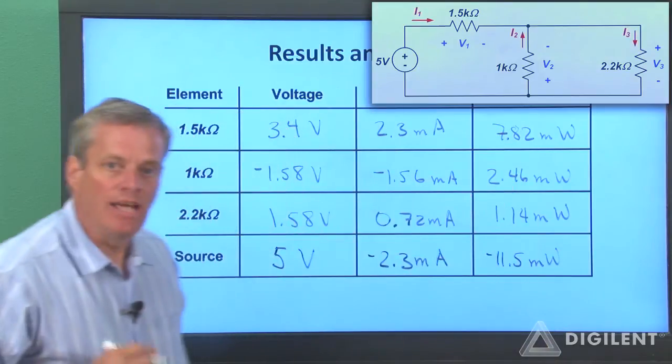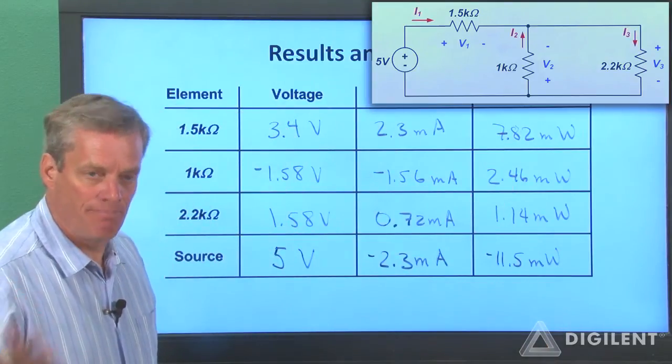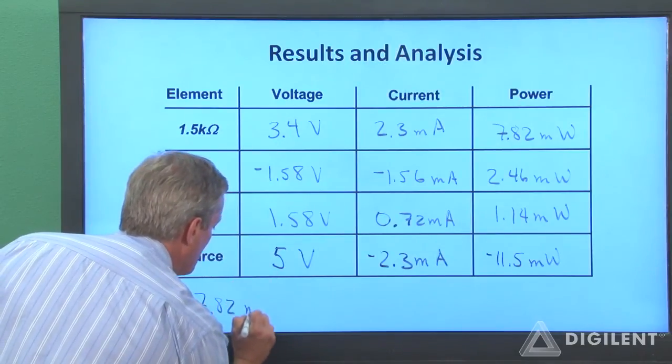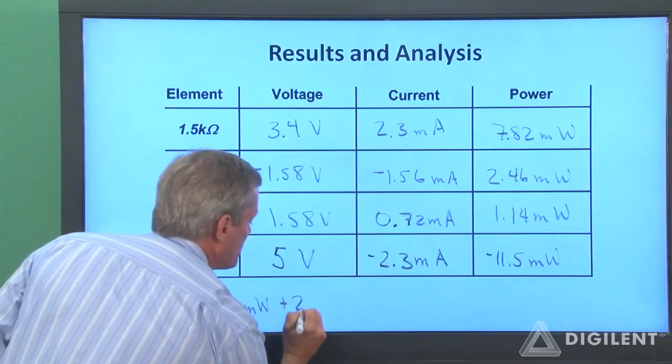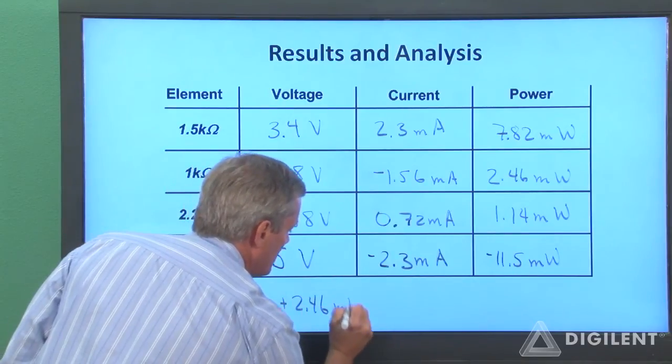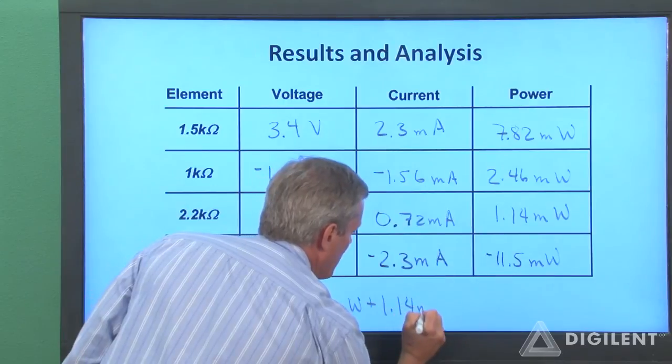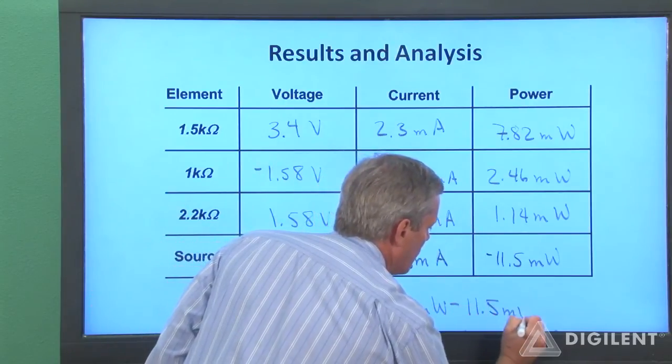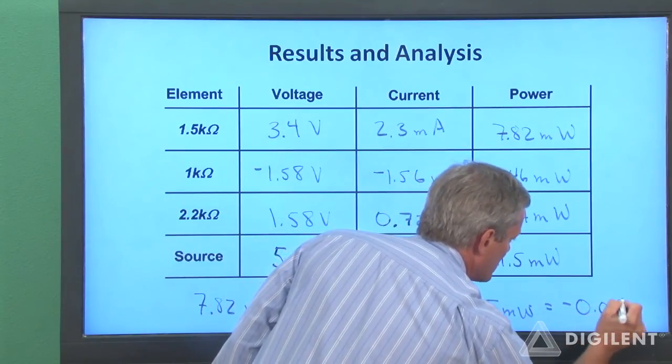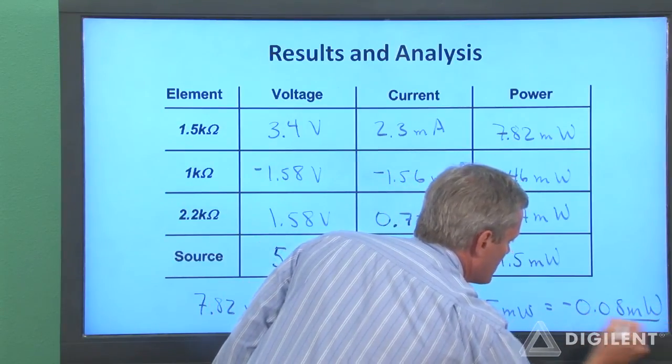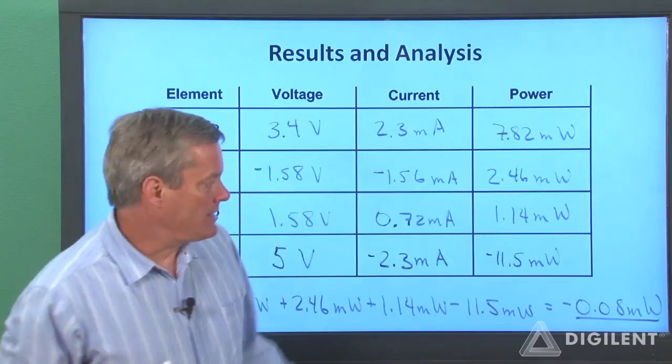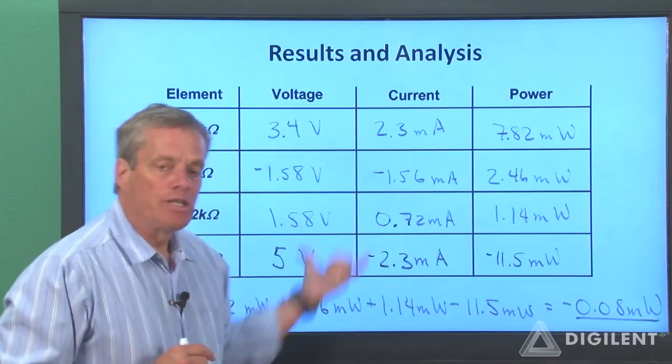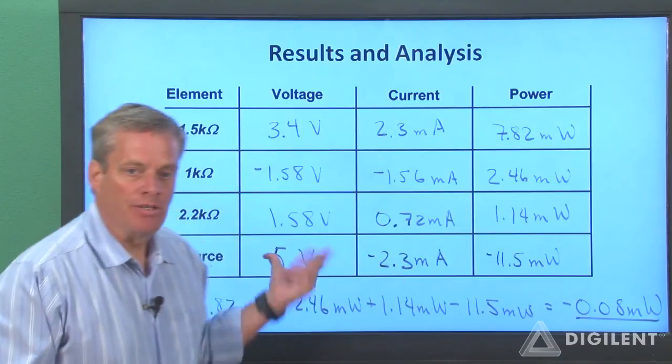Now if I add up all these powers, I should, according to the conservation of power law, get zero. So 7.82 milliwatts plus 2.46 milliwatts plus 1.14 milliwatts minus 11.5 milliwatts turns out to be negative 0.08 milliwatts. It's not quite zero, but it's close enough to zero to give us a warm fuzzy feeling, especially considering the accuracy of our measurements.